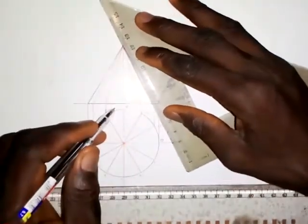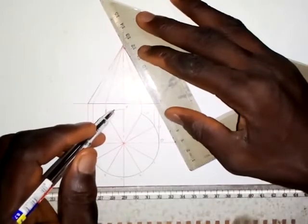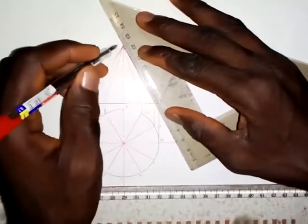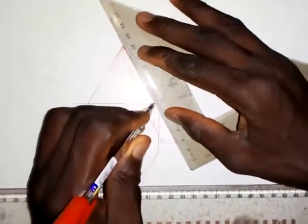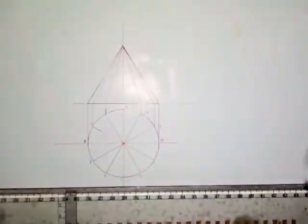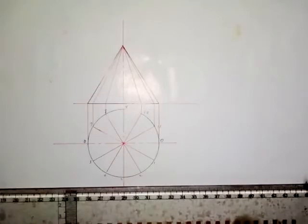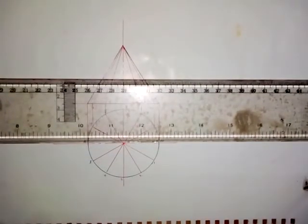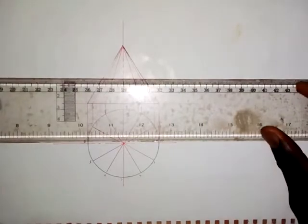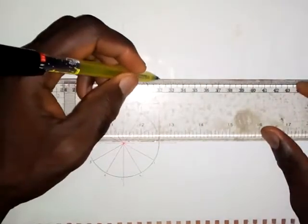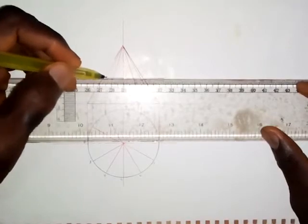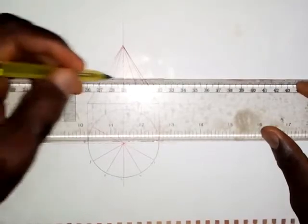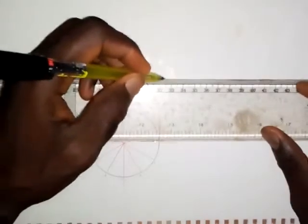I don't want to hide anything — I want you to see everything and how it should be done. Now I want to put the cutting plane. The cutting plane goes about 20 millimeters up from the base, parallel to the base of the cone.